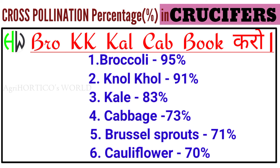The code is 'Bro KK Kal Kabuk Karlo.' Bro stands for broccoli at 95 percent. KK stands for kohlrabi at 91 percent. Kal stands for kale at 83 percent. Cab stands for cabbage at 73 percent. B stands for Brussels sprouts at 71 percent. And finally, Karlo stands for cauliflower at 70 percent.